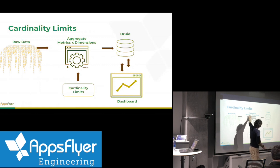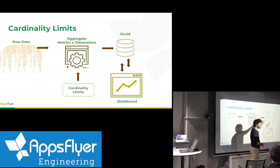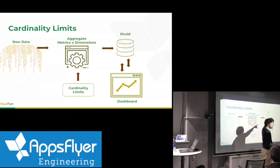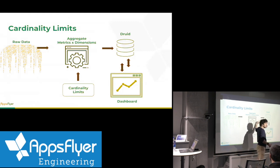This aggregation happens in Spark as a batch process. Then the results are loaded into Druid from files on S3 that we generate.